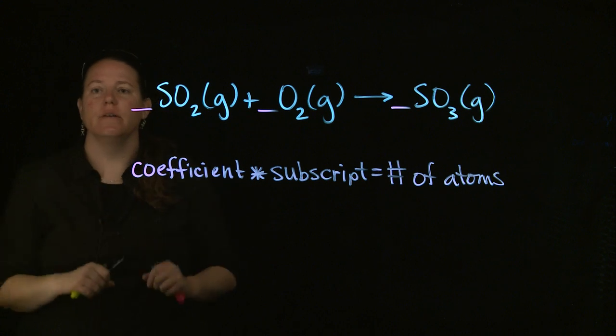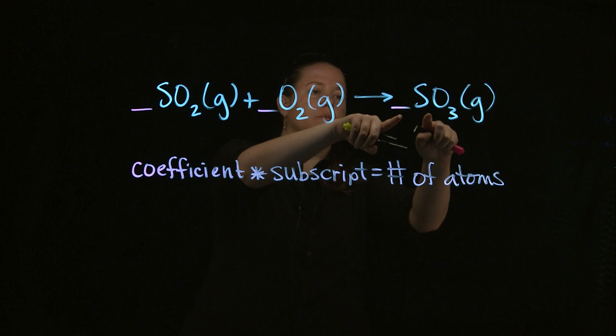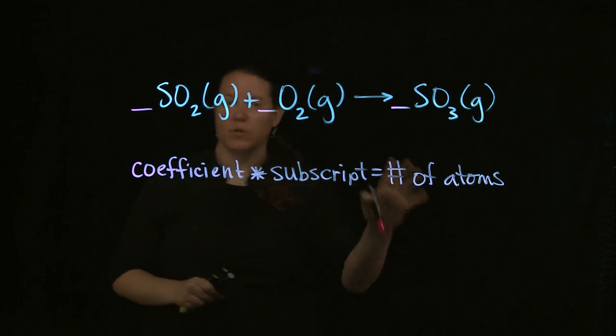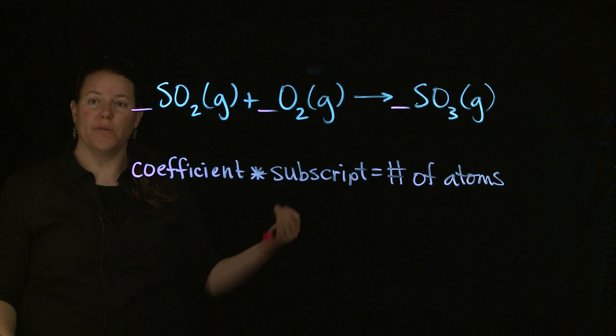Let's start with S. So if I look at the big number in front and the subscript, both of those are not written down, which means they are one. So I have one times one S's, which is one. I have one times one S's on this side, which is one. You don't do anything at that point. And lo and behold, we have the O's.